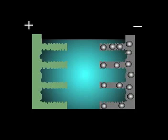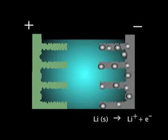Here, lithium atoms are oxidized to lithium ions, releasing electrons, with the lithium ions migrating into the liquid electrolyte.